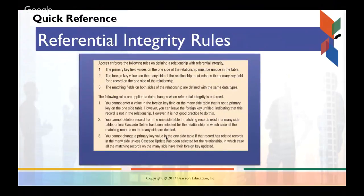So, quick reference for referential integrity rules. So Access does a good job enforcing the rules on defining a relationship. The primary key values on the one side must be unique. Foreign key values on the many side of the relationship must exist as the primary key field. And matching key fields on both sides of the relationship are defined with the same data type. They must be.